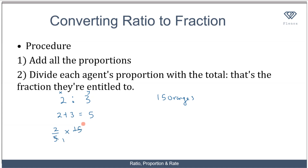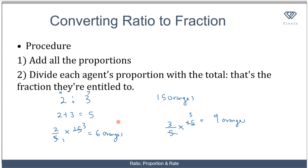So 2 over 5 times 15 gives 6 oranges. The second person is entitled to 3 over 5 times 15 oranges, which equals 9 oranges. So if I'm going to share 15 oranges in ratio 2 ratio 3, the first person gets 6 oranges and the second person gets 9 oranges. To verify, if you write out 6 ratio 9 and simplify by dividing both sides by 3, you're left with 2 and 3 — which reduces to 2 ratio 3, the original ratio.